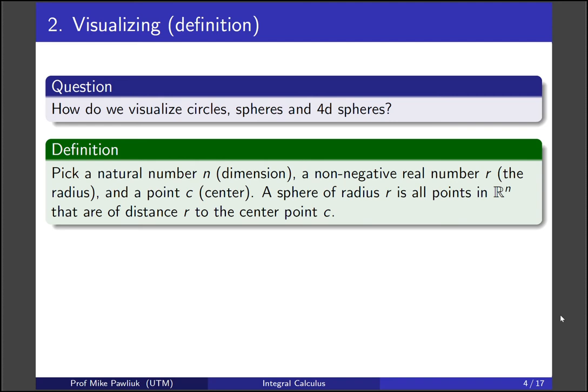So if you want to define a sphere of some high dimension, start with your n, which is your dimension, a non-negative real number r, which we'll think of as the radius, and some point c, which is the center. A sphere of radius r is all points in Rⁿ, so n-dimensional space, that are distance r to the center point c. So to define a sphere, you need a center point, a radius, and a dimension.